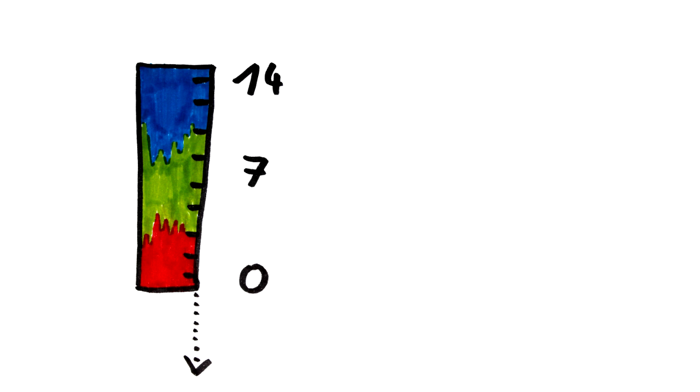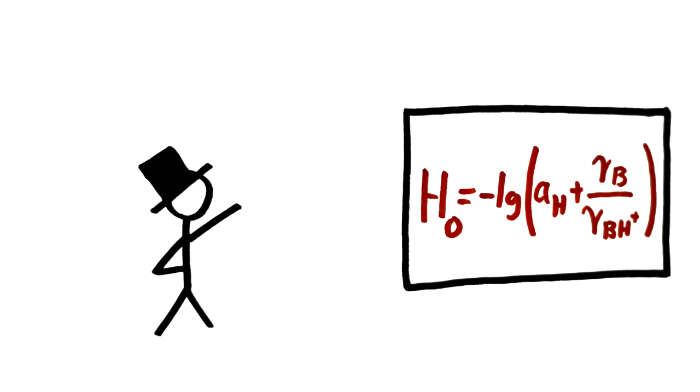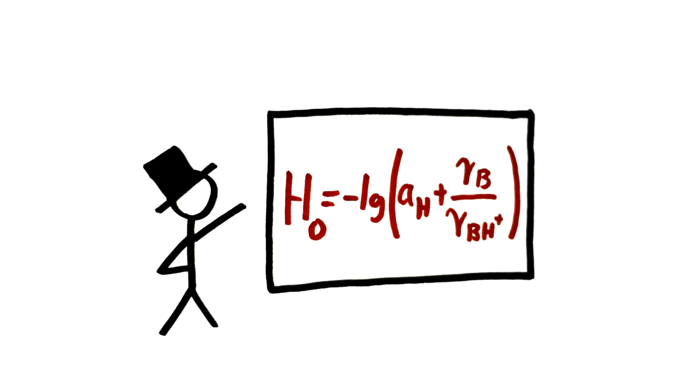For reasons we might go over in a future video, the strength of a superacid can't be expressed in terms of the pH scale. Luckily, scientists came up with another scale to quantify the acidity of these acids: the Hammett acidity function H0. The lower the value of H0, the higher the acidity.